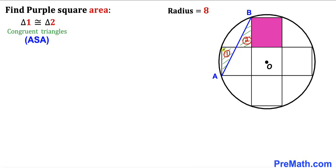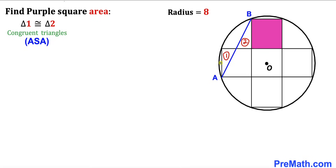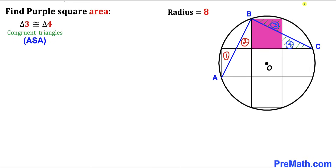We can see that both triangles one and two are congruent according to the Angle-Side-Angle congruency theorem, since these are 90-degree angles, these are vertical angles, and these are alternate angles. Furthermore, this side length is equal to this side length. We then connect point B with point C and focus on the next two right triangles, labeled three and four, which are congruent as well by the same theorem.